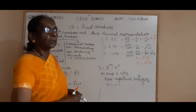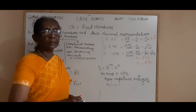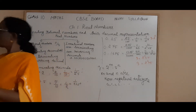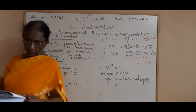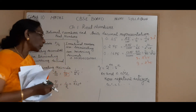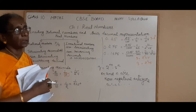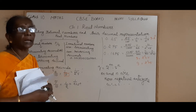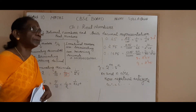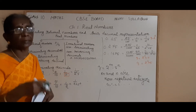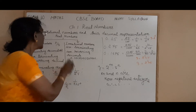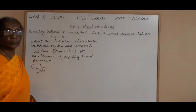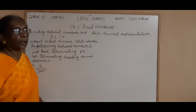Using this, we are going to do the sums in the last exercise — Exercise 1.4. In other words, you can also convert the given rational number into its decimal form without actual division, and that we will see later when we are doing this. So, Exercise 1.4, Sum number 1.